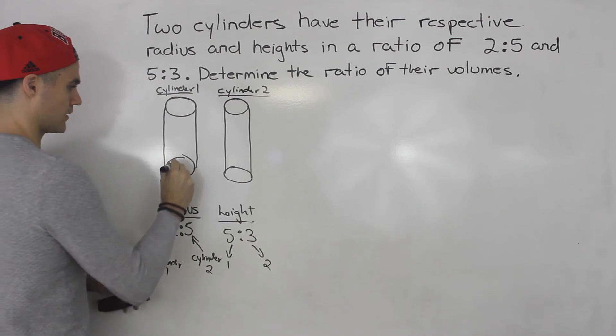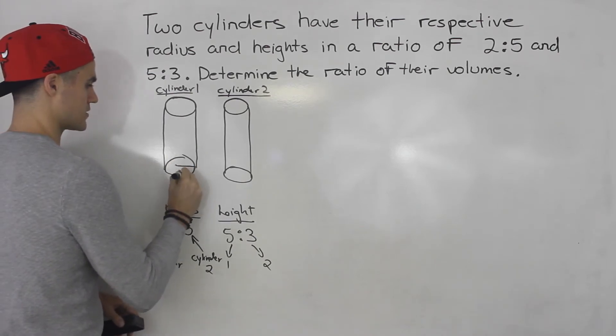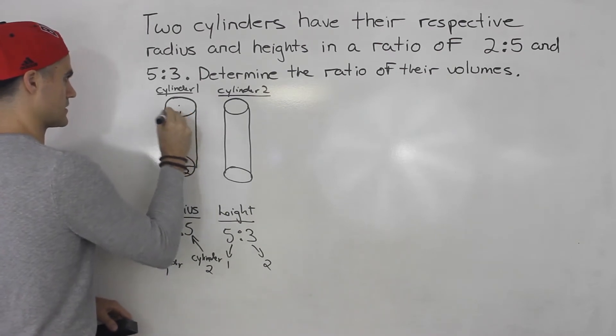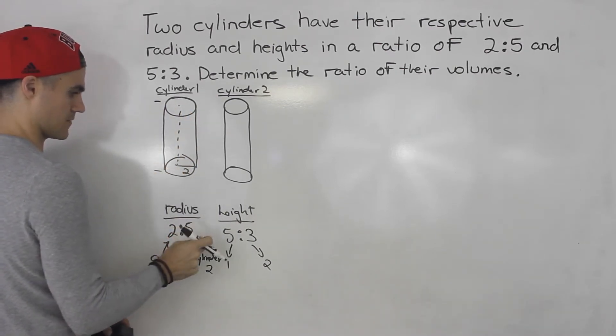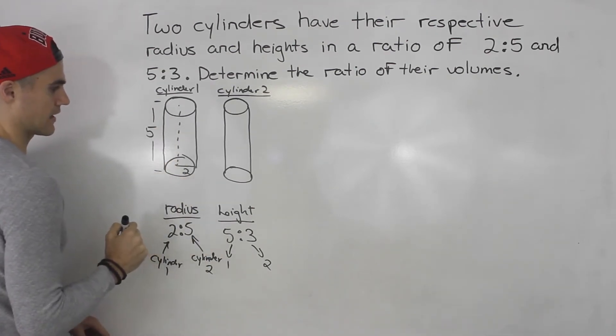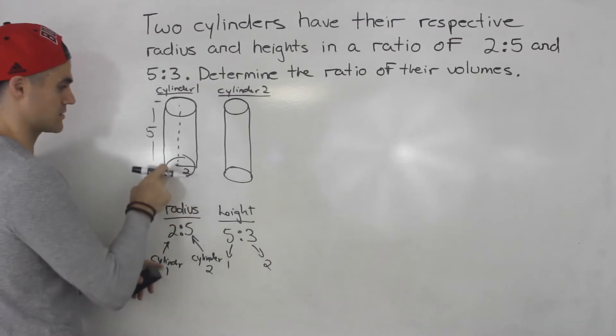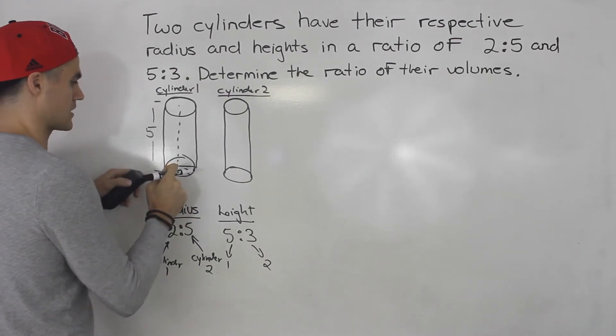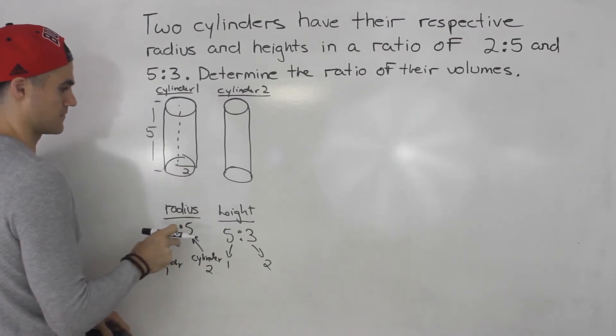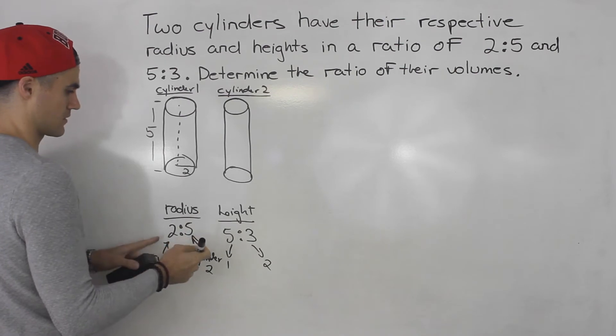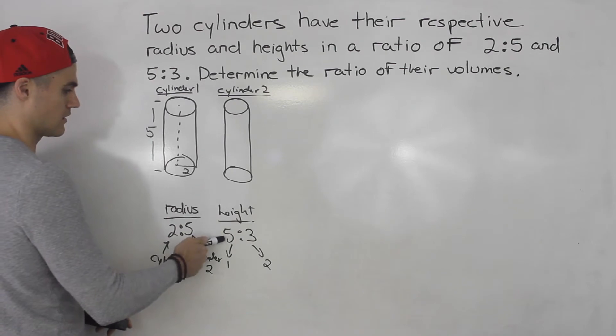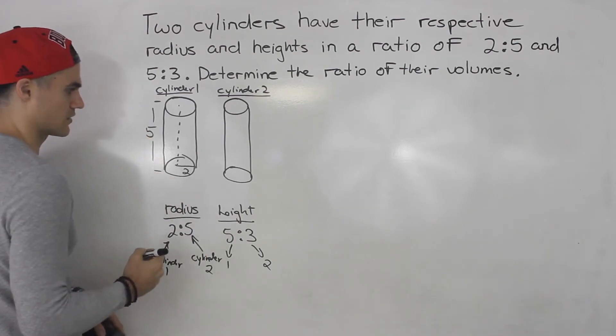So for cylinder 1, radius is 2 and then the height is 5. Like that. And remember this is all relative. So this could be 4 and 10, this can be 6 and 15. It's all relative but the simplified ratios are given here. So 2 for the radius of cylinder 1, 5 for the height of cylinder 1.